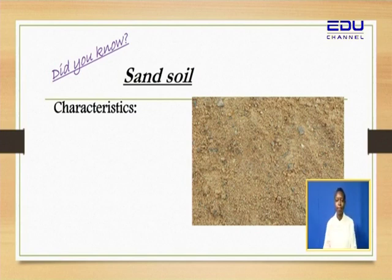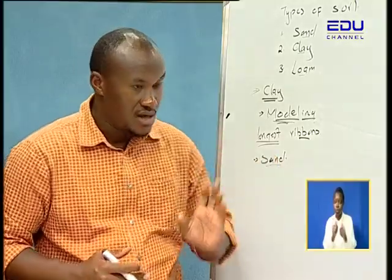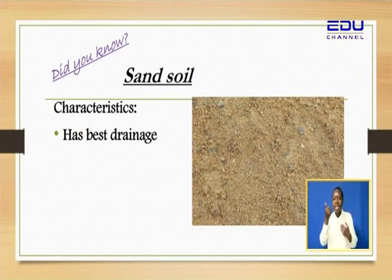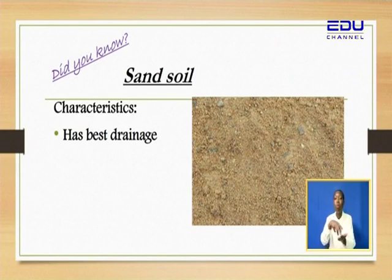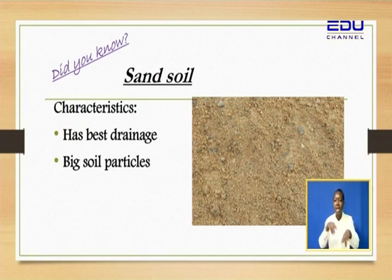If we relate the properties we talked about: sand has the best drainage — it allows water to pass through very smoothly. Like we said, once it rains you can even walk out with slippers, because the water just flows away. And if you put it on your fingers, you can feel the roughness — you can feel the particles.